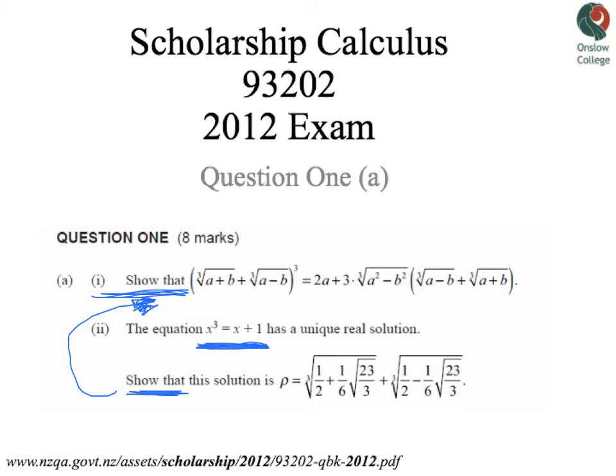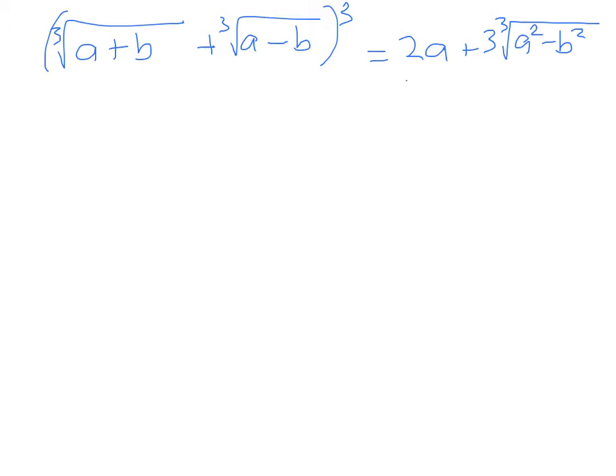On the next slide, I'm going to go through part 1. Alright, well, on the left-hand side, we've got this. The cube root of a plus b plus the cube root of a minus b, all cubed. And we're asked to show that that is equal to 2a plus 3 times the cube root of a squared minus b squared times the cube root of a minus b plus the cube root of a plus b. So when you first look at that, that looks hideous.